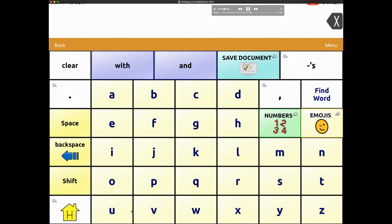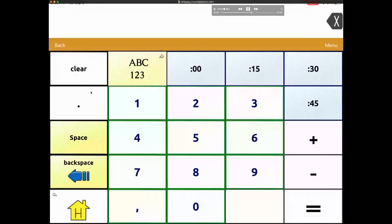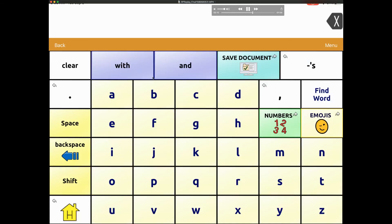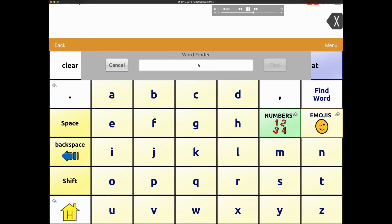You can find a word by going to the ABC and number page. In the ABC page on the right hand side you have find word and you can type in any word you are looking for.